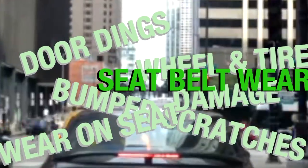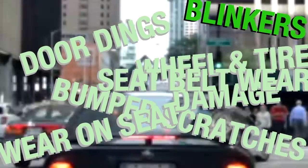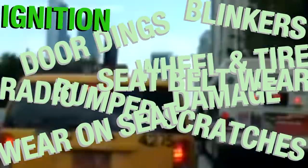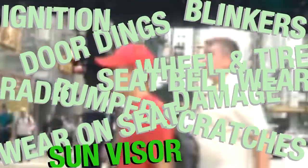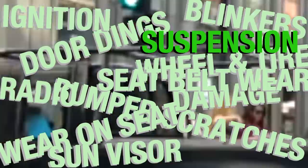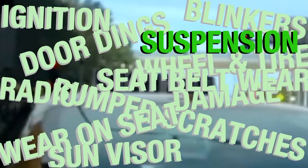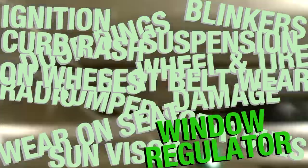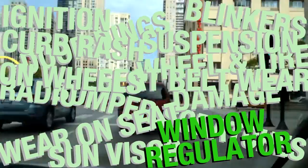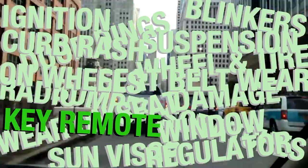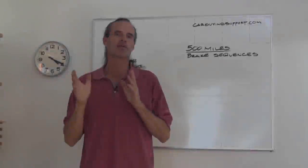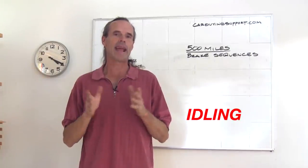You're going to have seat belt wear. The blinkers will be used more. The radio, the ignition is going to be used ten times as much. The sun visors, the suspension from potholes are going to be impacted. Curb rash on the wheels, the window regulators, the list goes on and on. Even things that you wouldn't even think about, like the key remote, will be used a lot more in City Sue's car than Howard's.